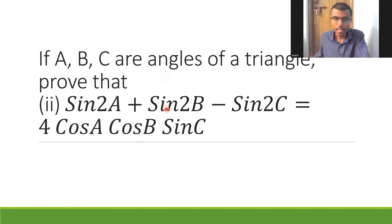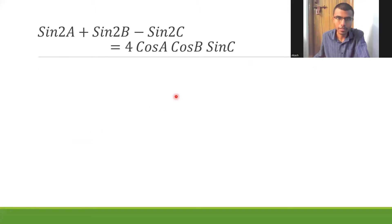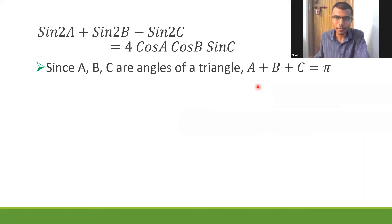Since A, B, C are angles of a triangle, A plus B plus C is equal to π (180 degrees) because sum of angles in a triangle is 180 degrees. That's going to be my first step. Now let me start with the LHS and prove that this is going to be equal to the RHS. This is my LHS: sin 2A plus sin 2B minus sin 2C. Now I'm going to group the first two terms.